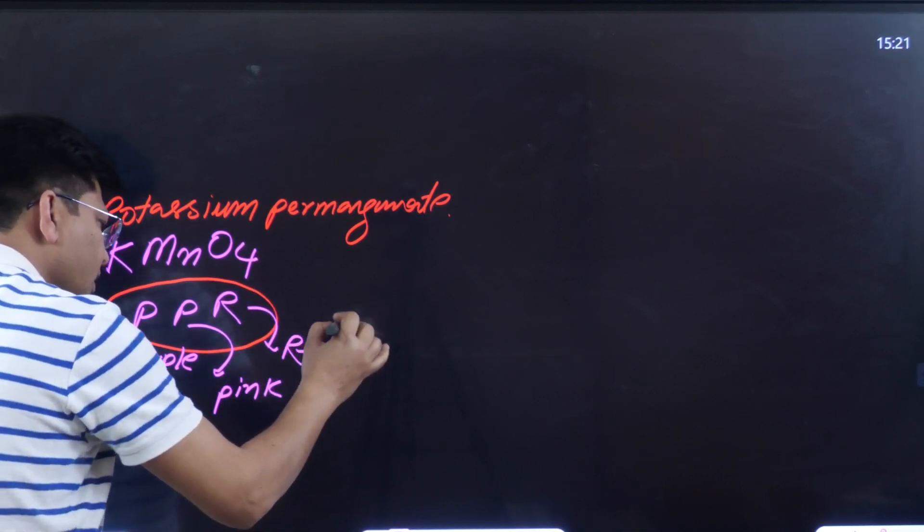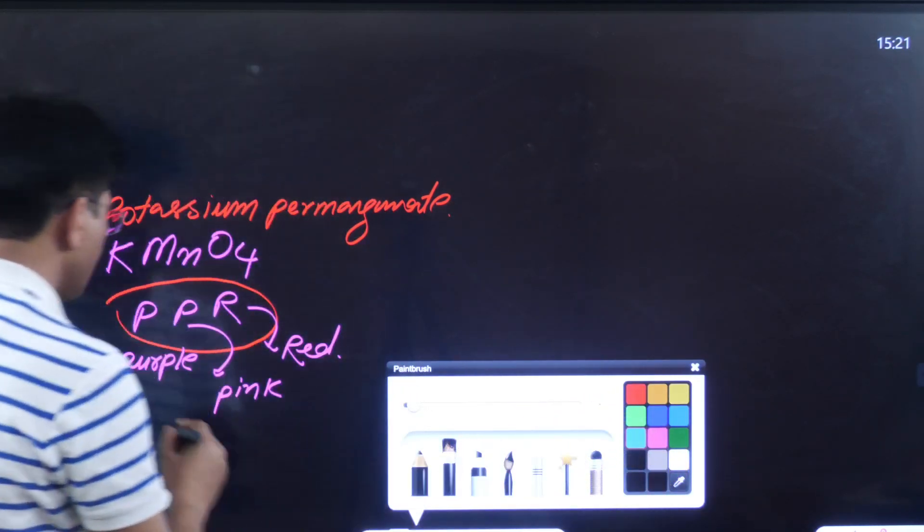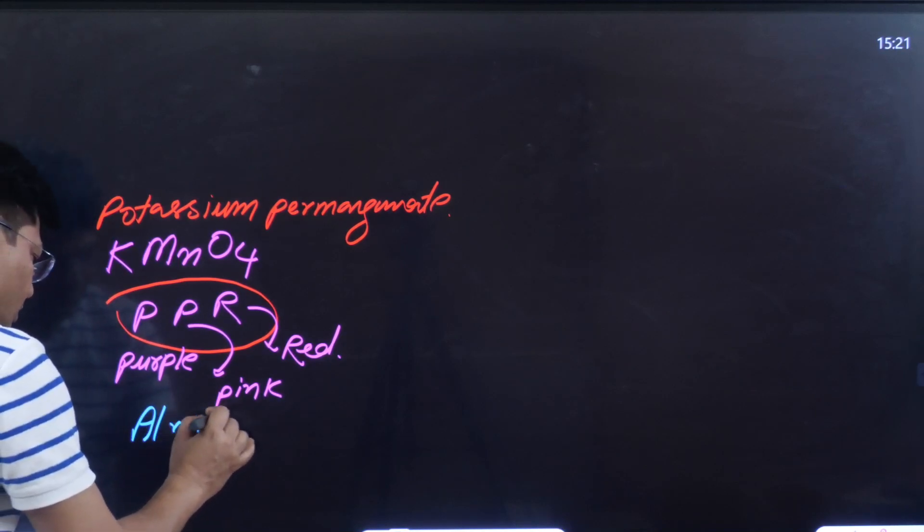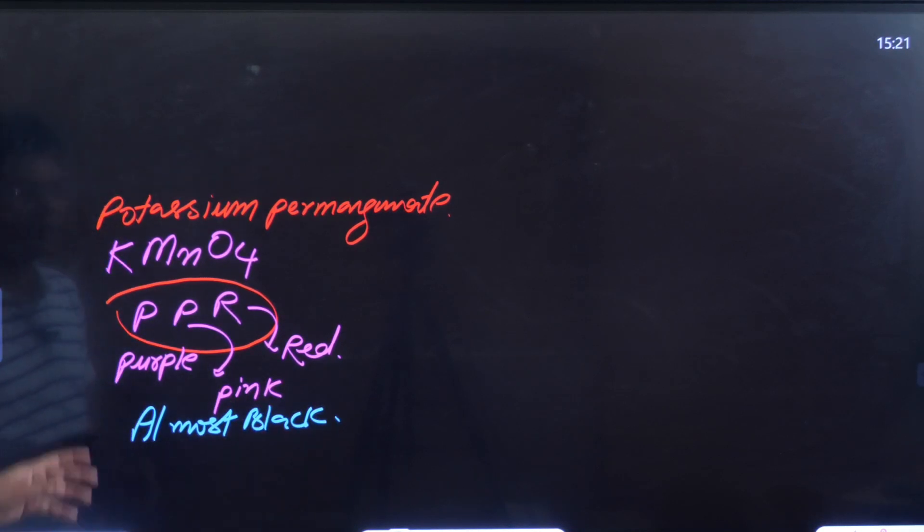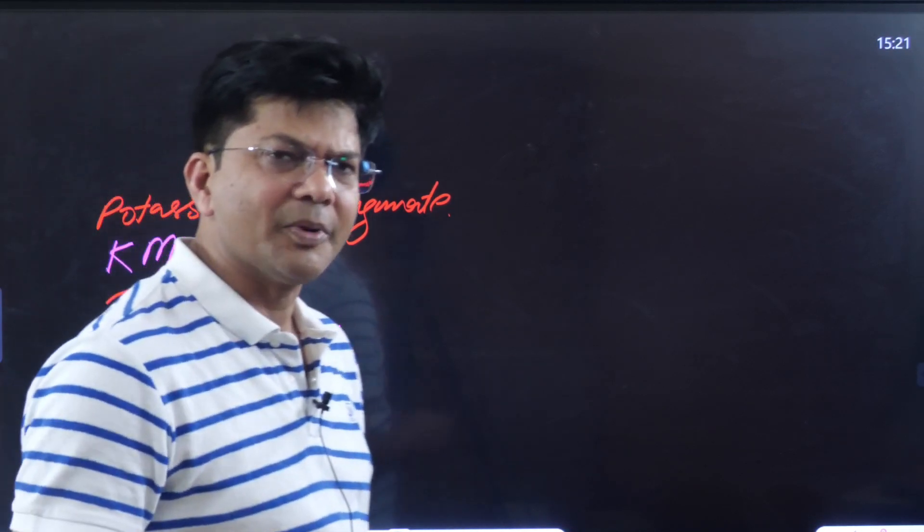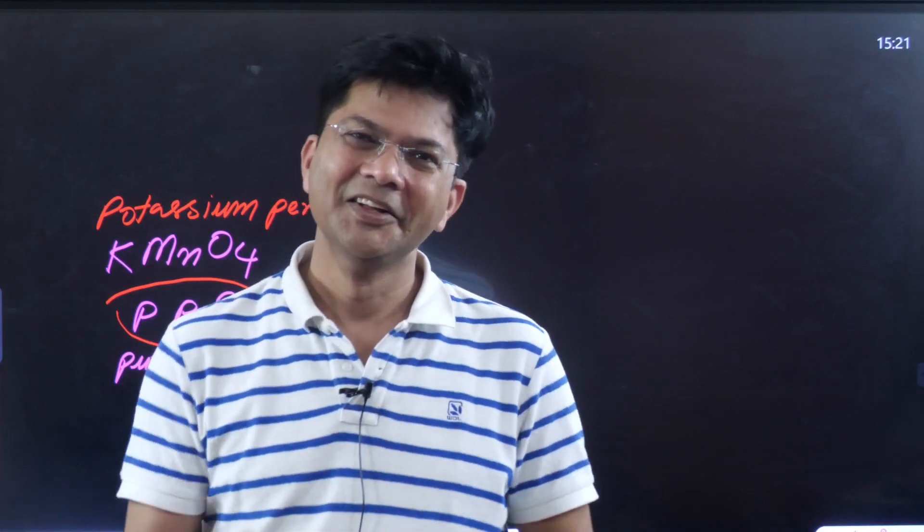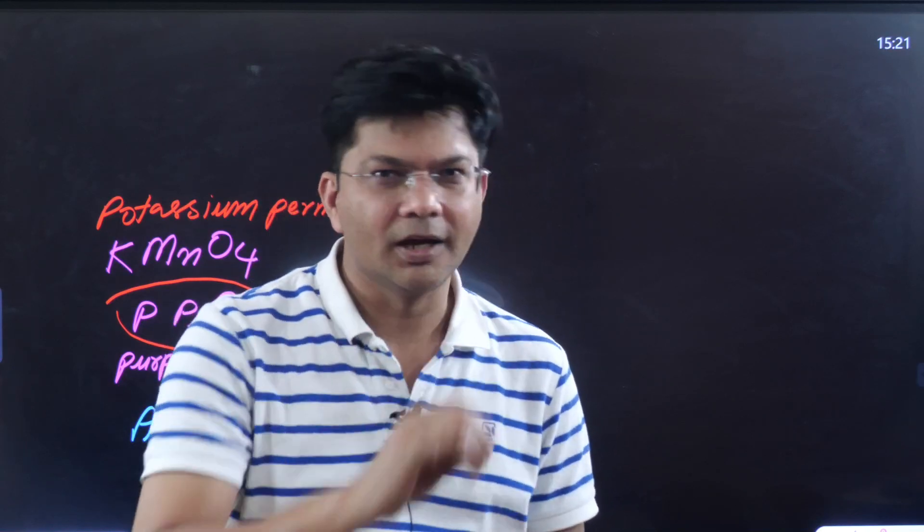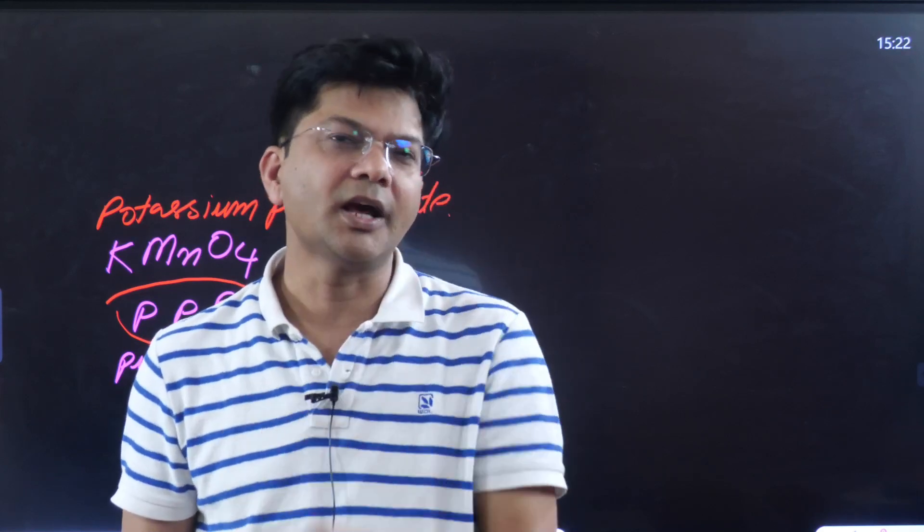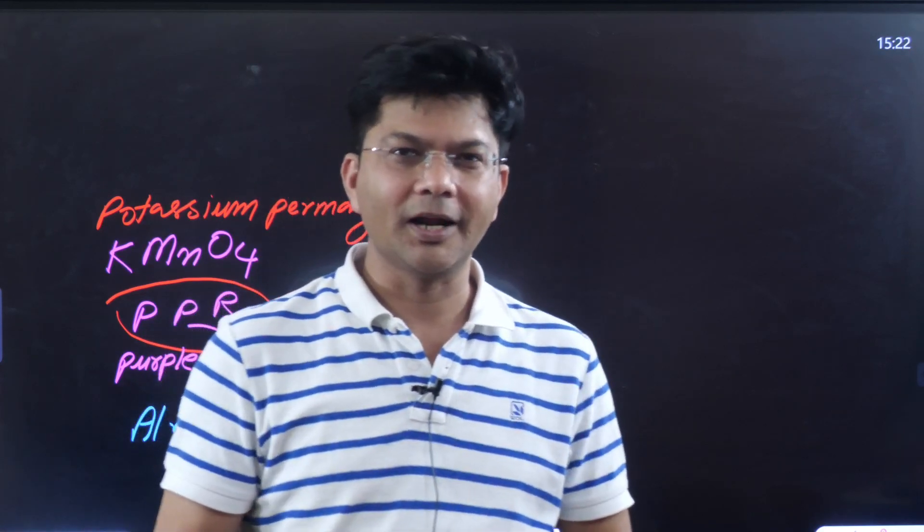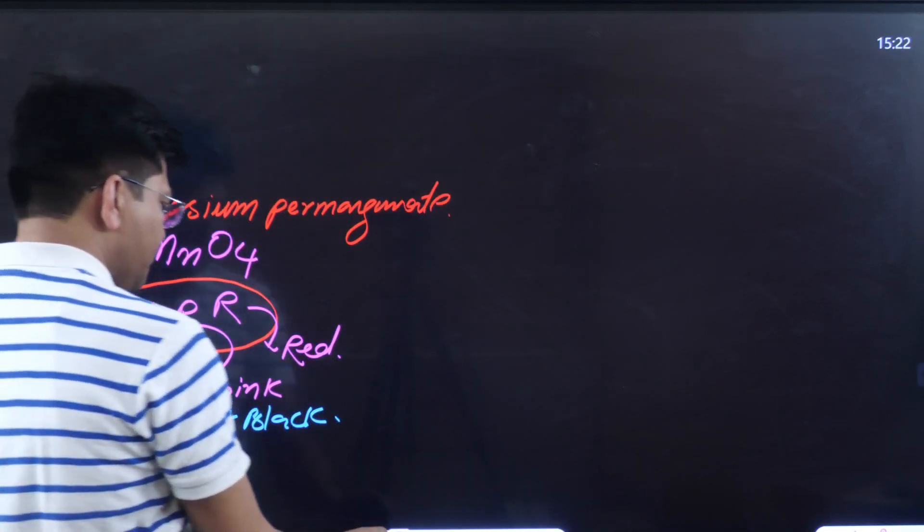And NCERT even says it is almost black in color. Almost black. So these are the colors. Now you'll ask, sir, a compound with so many colors, what does it mean? Holi festival is coming. When we add solid color in Holi, the solid color is very dense. As you do dilution and add more water, the color becomes lighter. So it all depends on that. So this potassium permanganate...